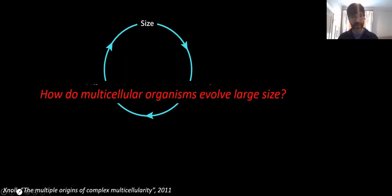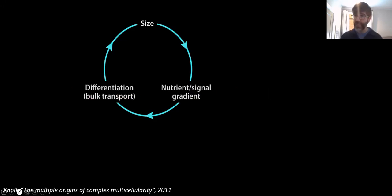So where do we break into this cycle? What comes first? How do multicellular organisms evolve large size? So this is a significant open question in the evolution of multicellularity.